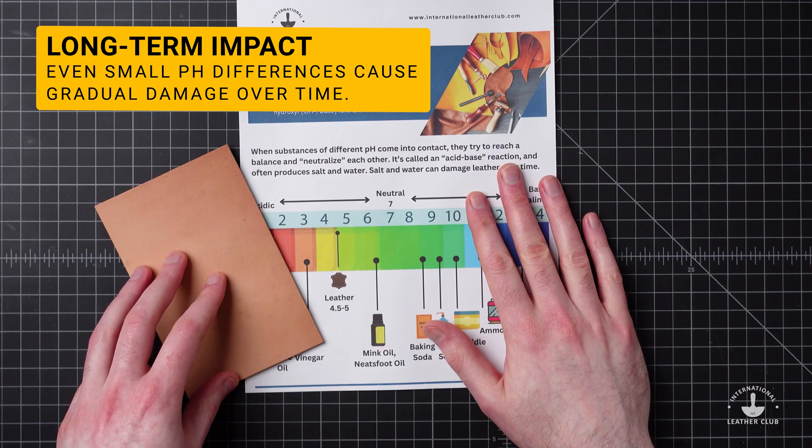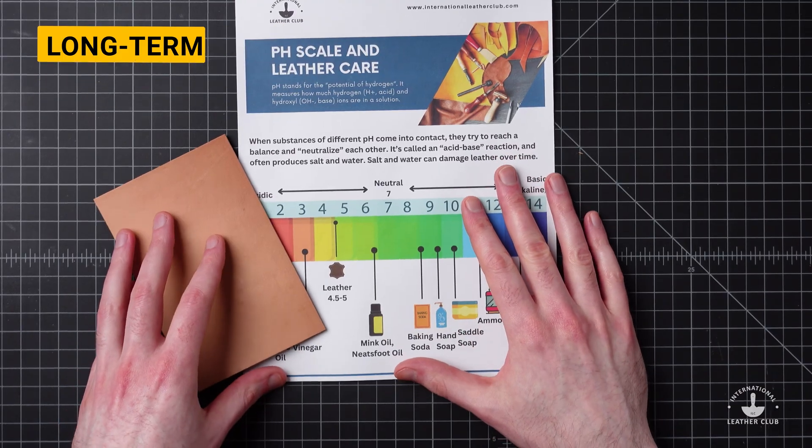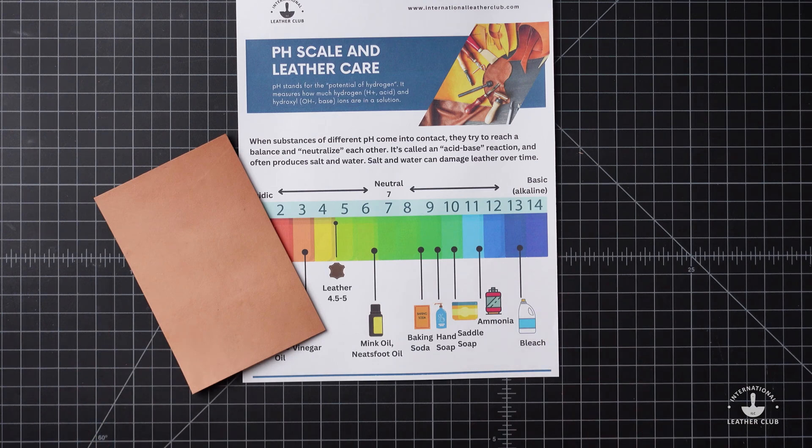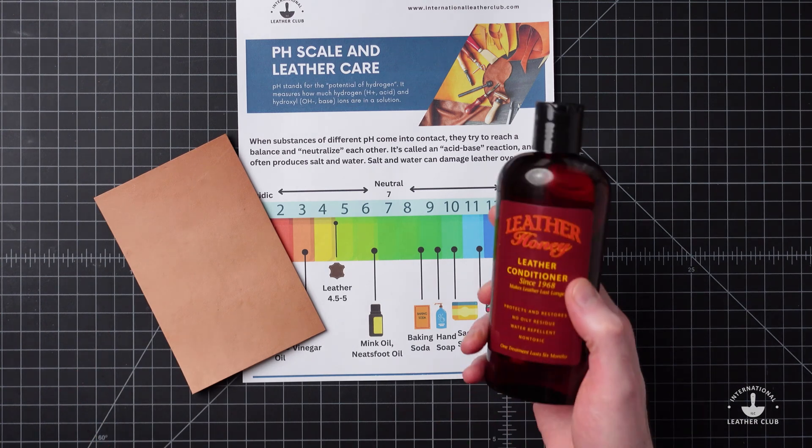How does all this relate to what we do day-to-day, especially to cleaners and conditioners and standard leather care? First is that most everything we clean and condition with has a pH level.